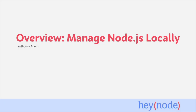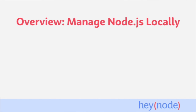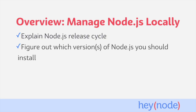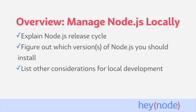To get started developing with Node.js, you'll need to have Node.js installed on your local machine. That's the only real requirement, but there are a couple of things that you can do to make this experience better. In this tutorial, we'll explain the Node.js release cycle, which will help you figure out the version or versions of Node.js that you should work with. We'll also recommend the best way to get Node.js installed onto your local machine, as well as some other things to consider when developing locally with Node.js.